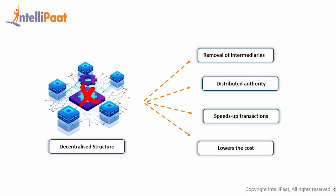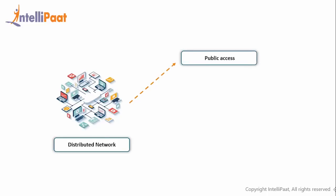Let's move on to the second feature, which is distributed network. Blockchain works on distributed network—that is to say, every node in the network has access to every block of information, resulting in bringing transparency.